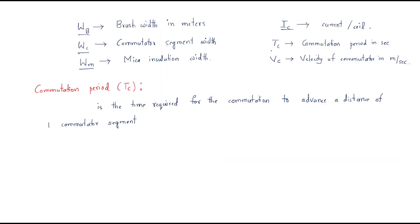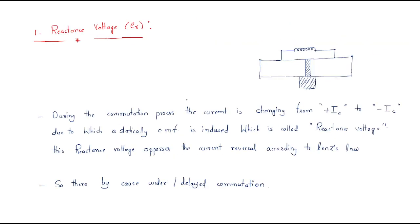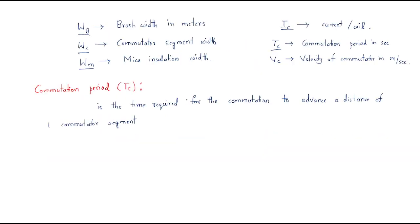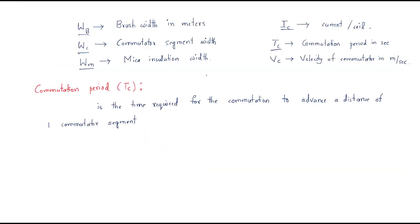Next important term is IC — the current flowing through the coil. Then TC — the commutation period. The commutation period is the time duration required to complete the commutation process. Next is VC — the velocity of the commutator segment in meters per second. This tells us how much speed the commutator is operating at. These are the important terms that will be useful going forward.